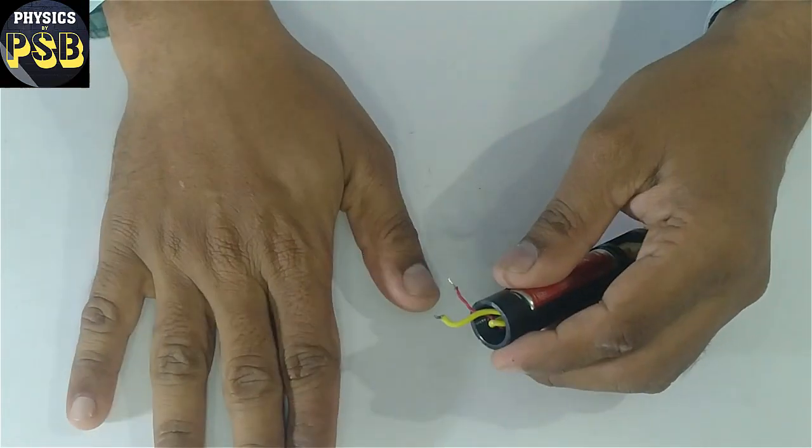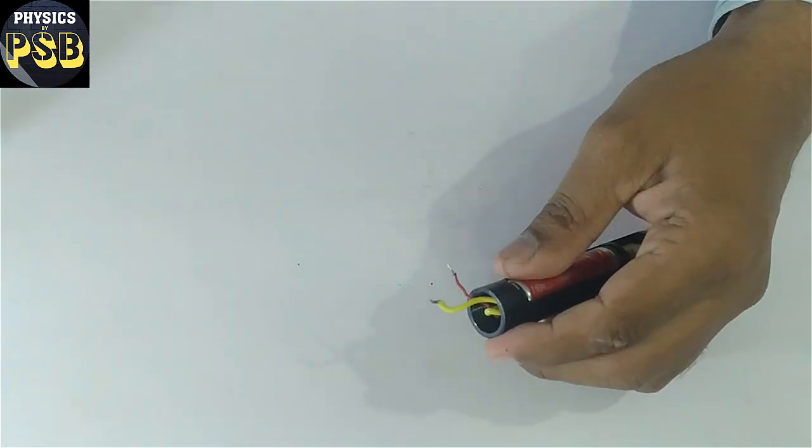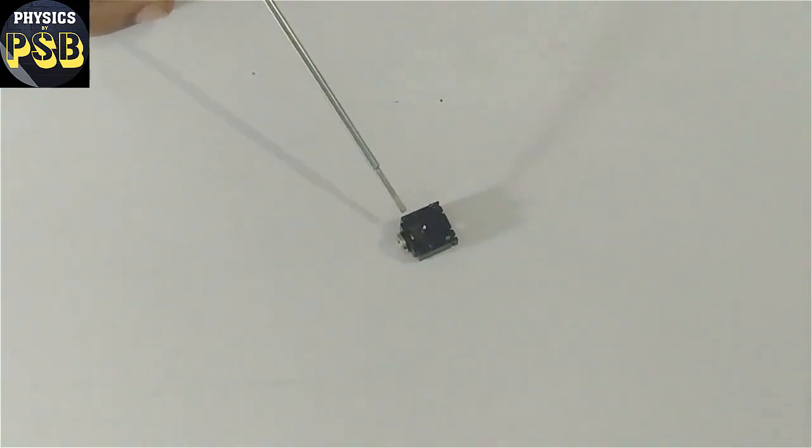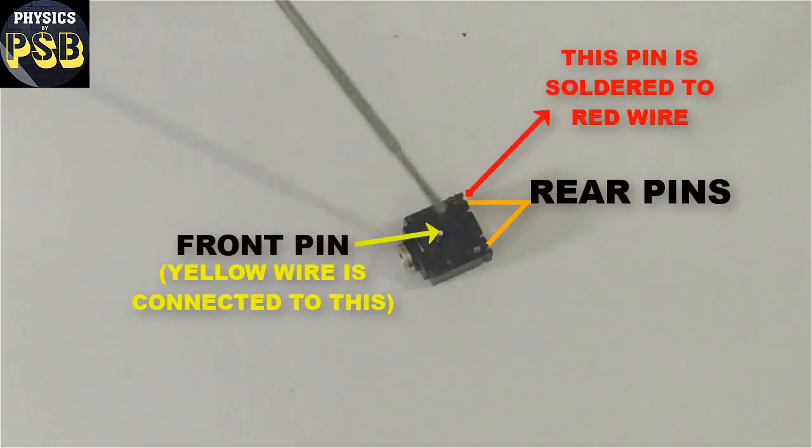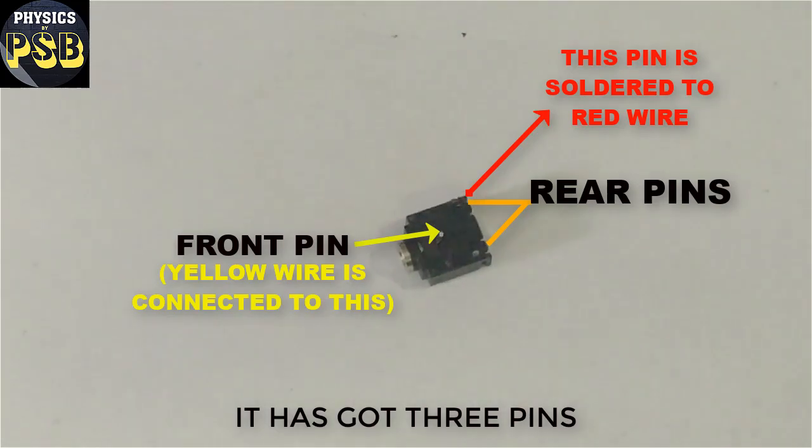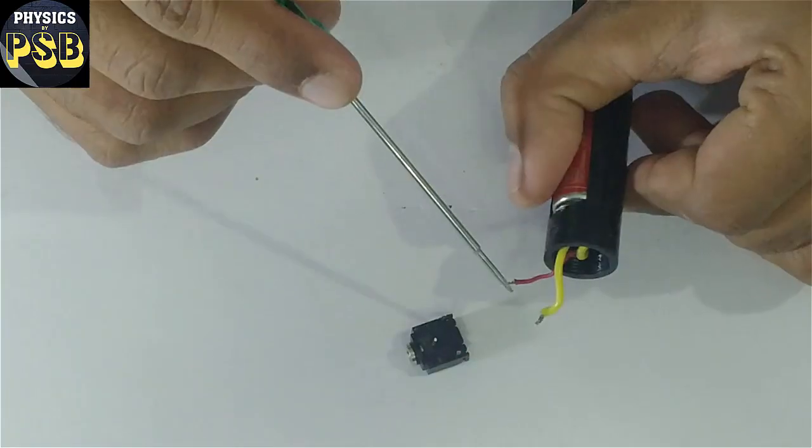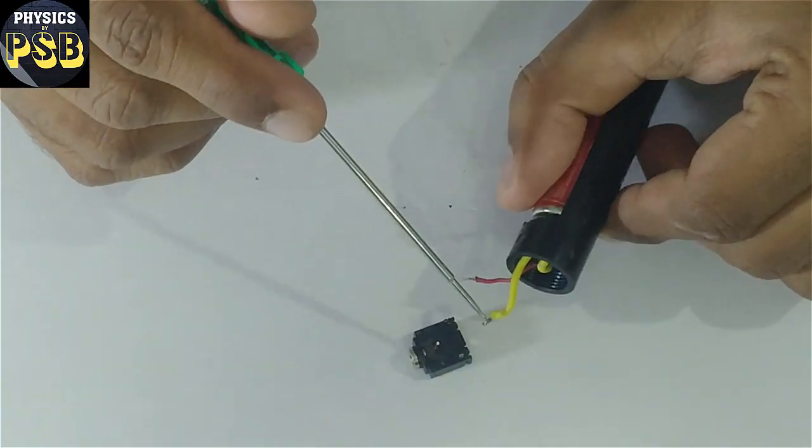What I am going to do is solder this to a 3.5mm female jack. This has got three pins as you can see here. I will connect red wire to this pin and yellow wire is connected to the front pin.